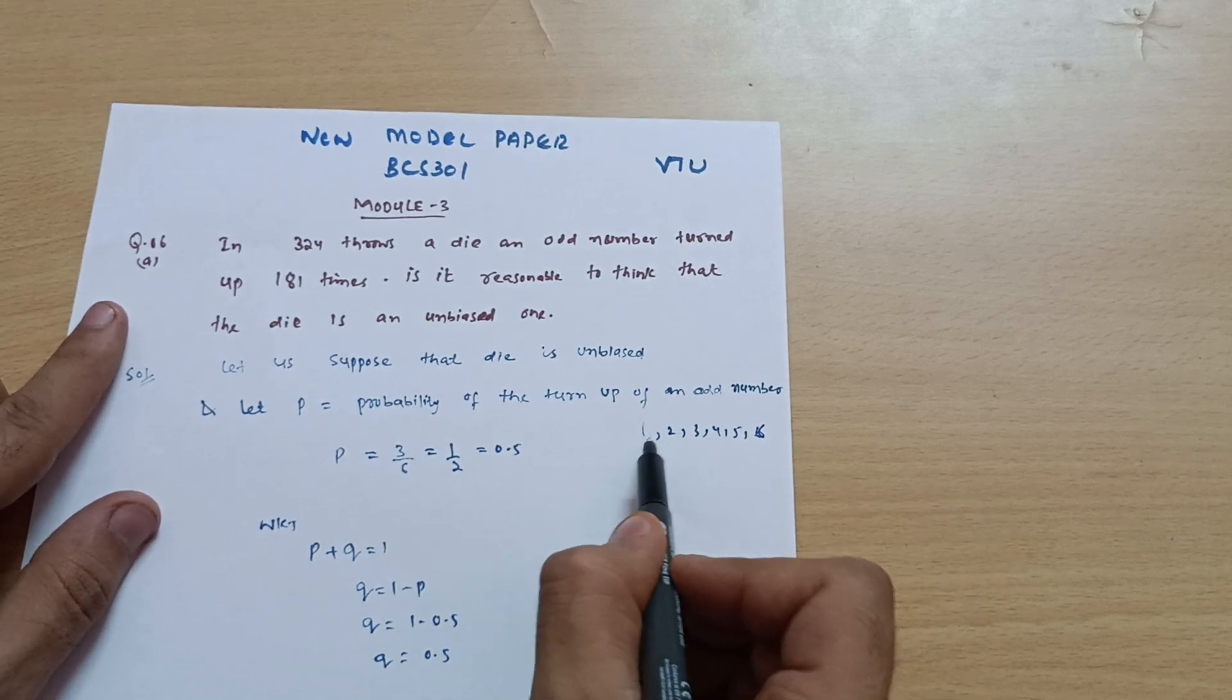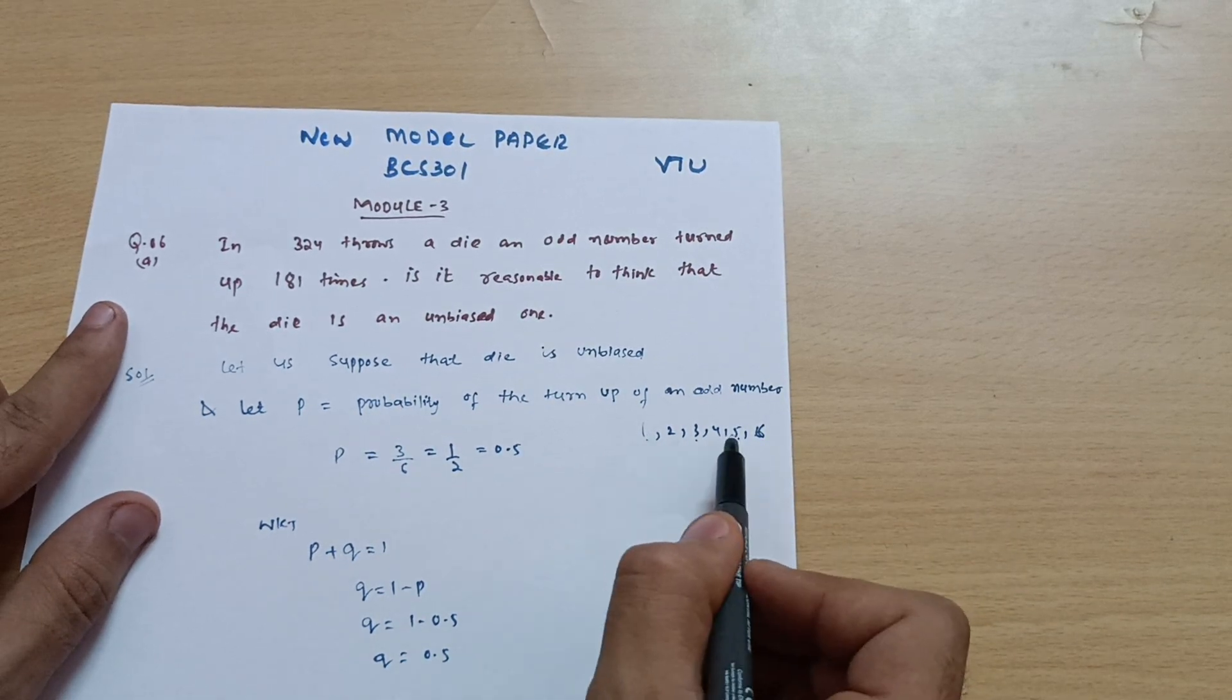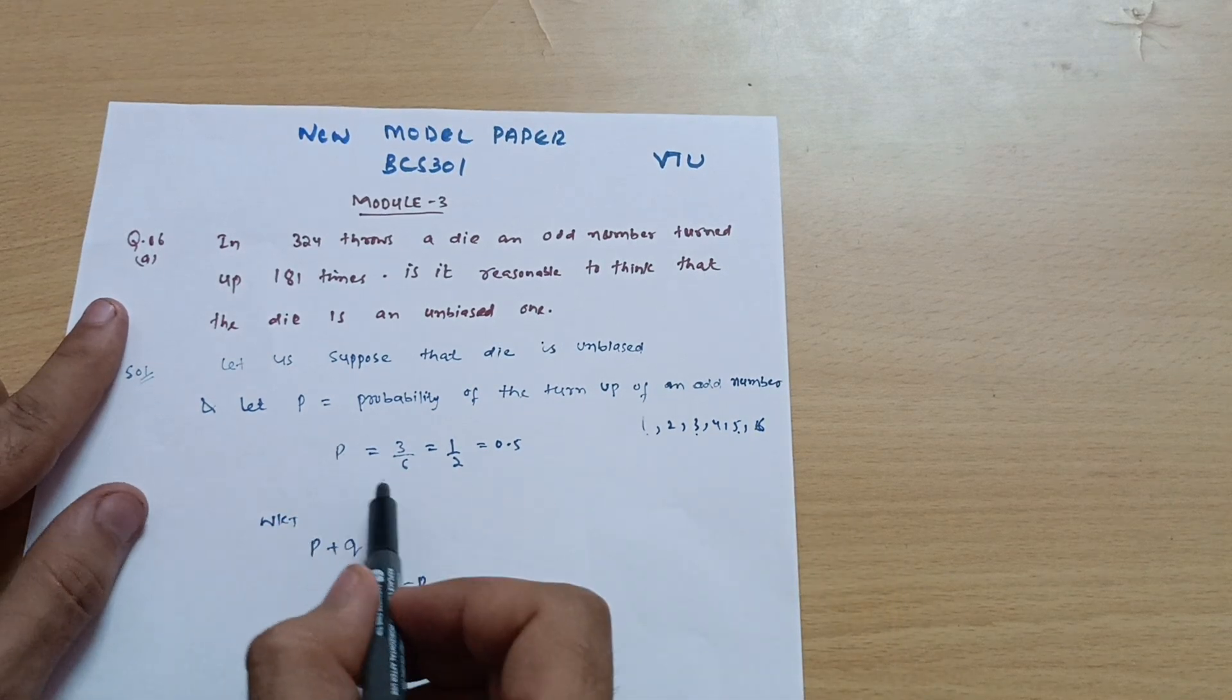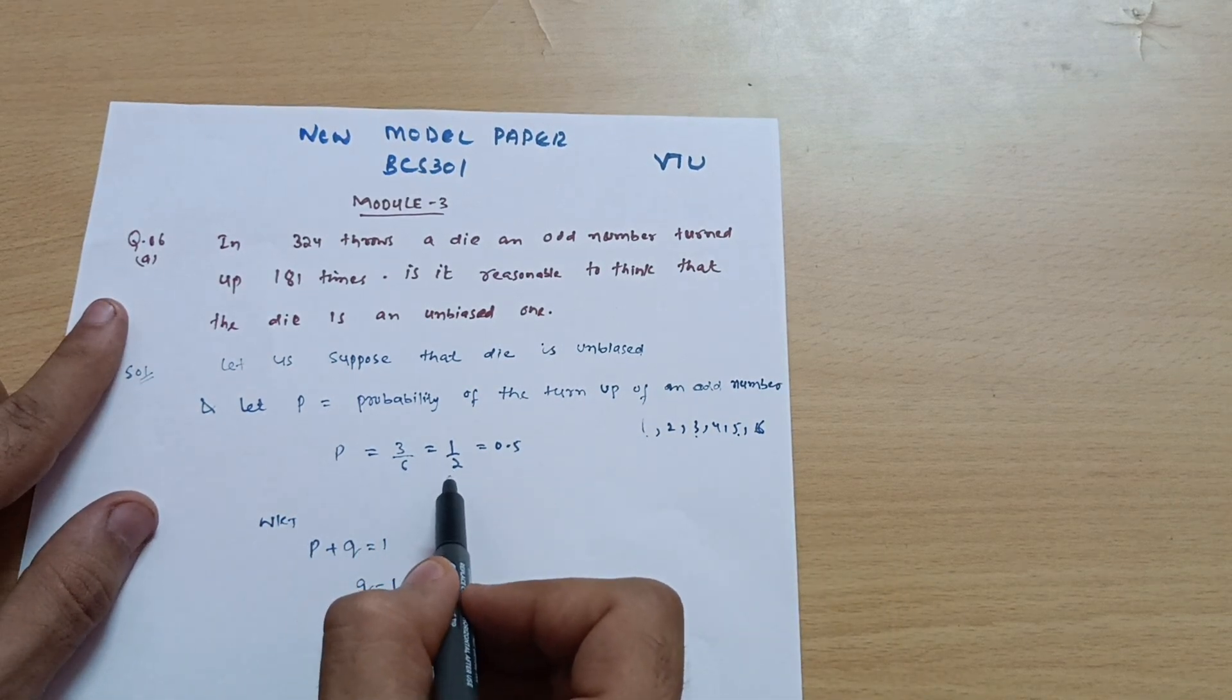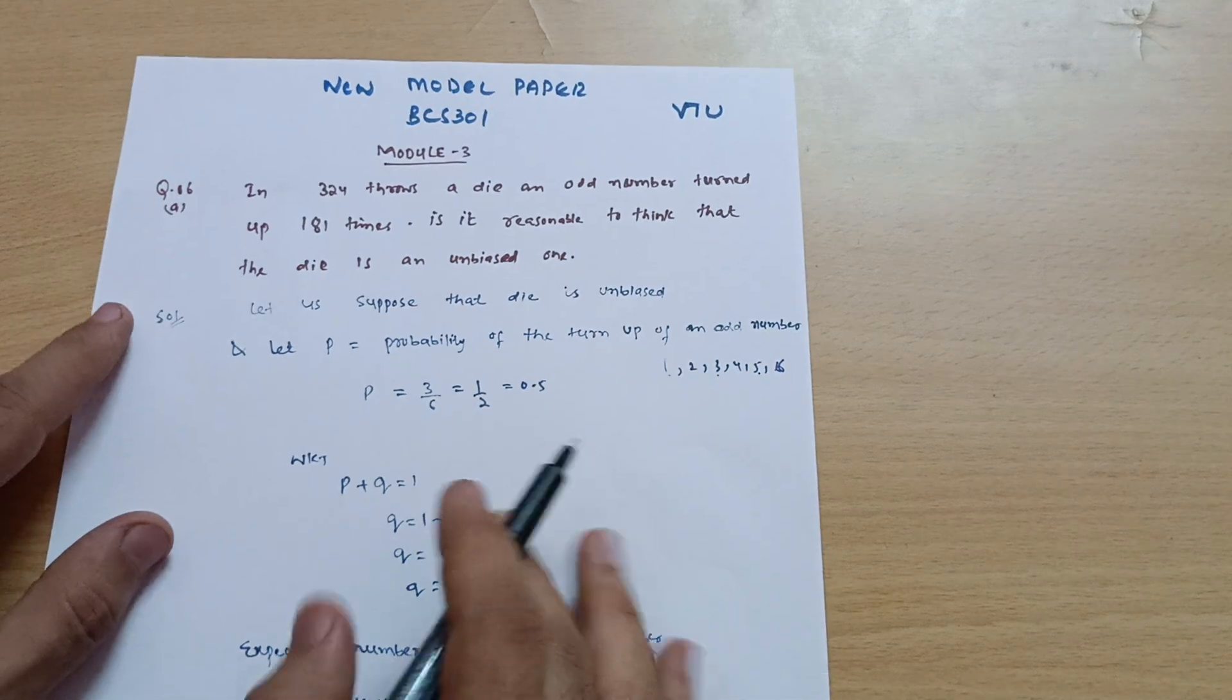How many are the odd numbers in this particular case? One, three, and five are the odd numbers. So three numbers are odd. So I can write down the probability is equal to 3/6, which is equal to 1/2, which is equal to 0.5.